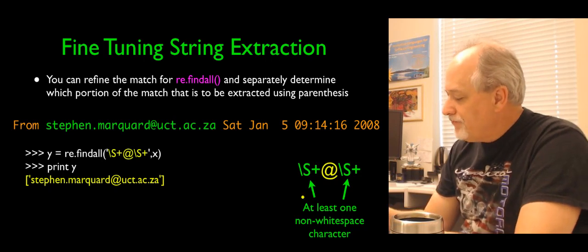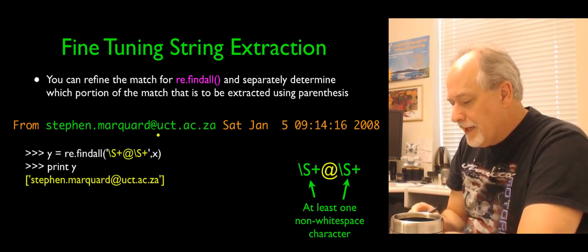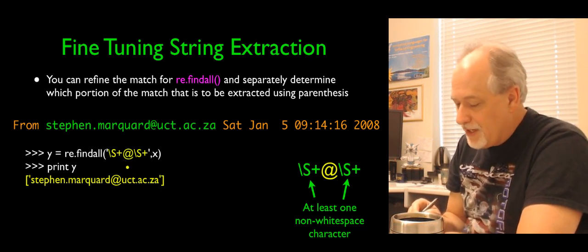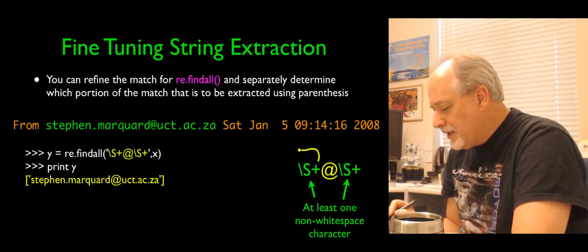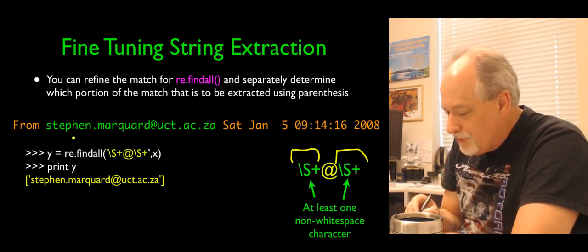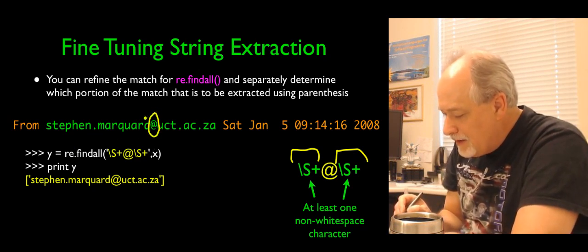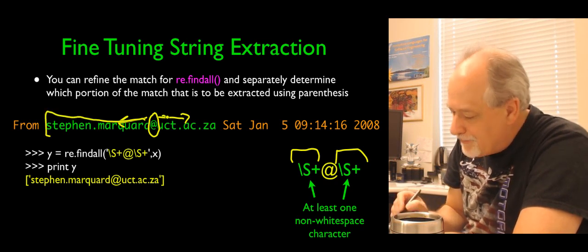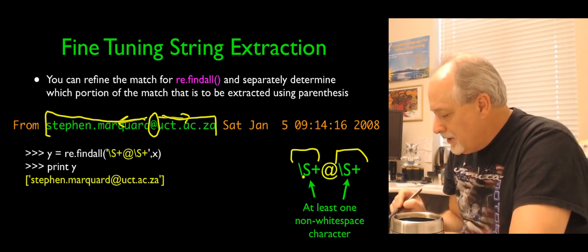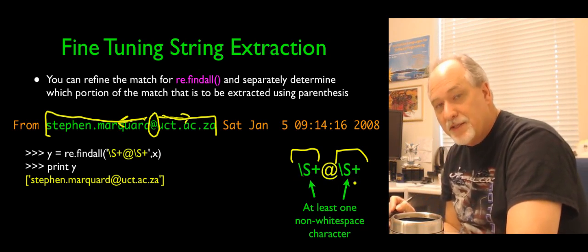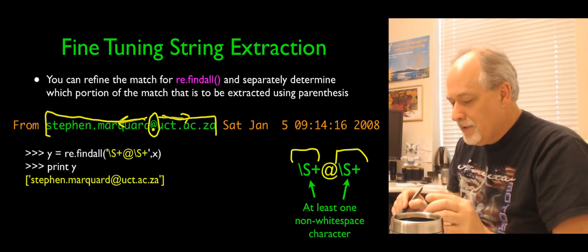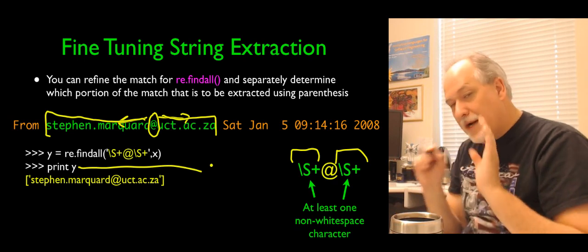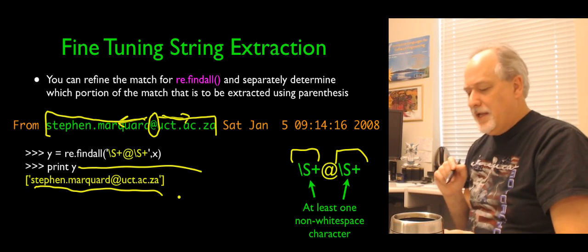For example, if we're trying to pull an email address out of a string, we can make good use of non-blank characters. The at sign is just a character. We say: at least one non-blank character before it and at least one non-blank character after it. The regex finds the at sign and pushes outward greedily as long as characters are non-blank, stopping at spaces on both sides. So `\S+@\S+` gives us something like 'stephen.marquard@uct.ac.za'.